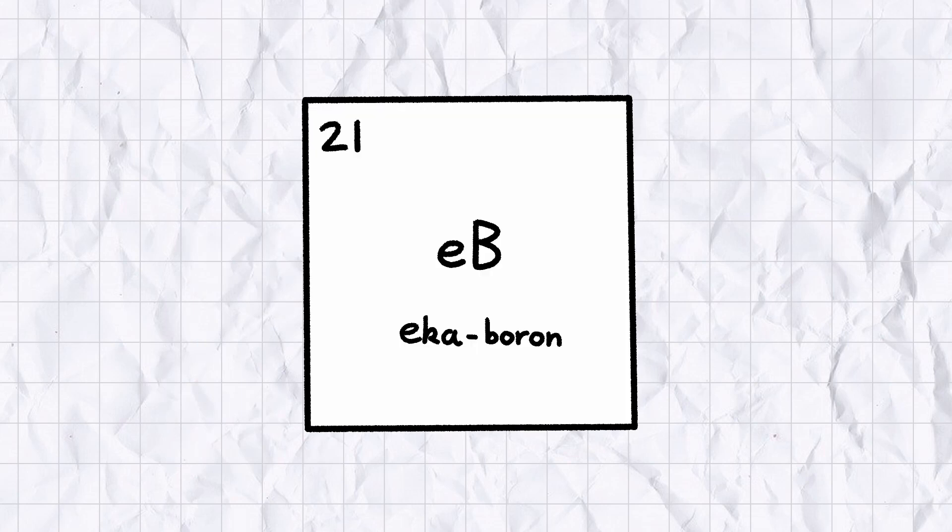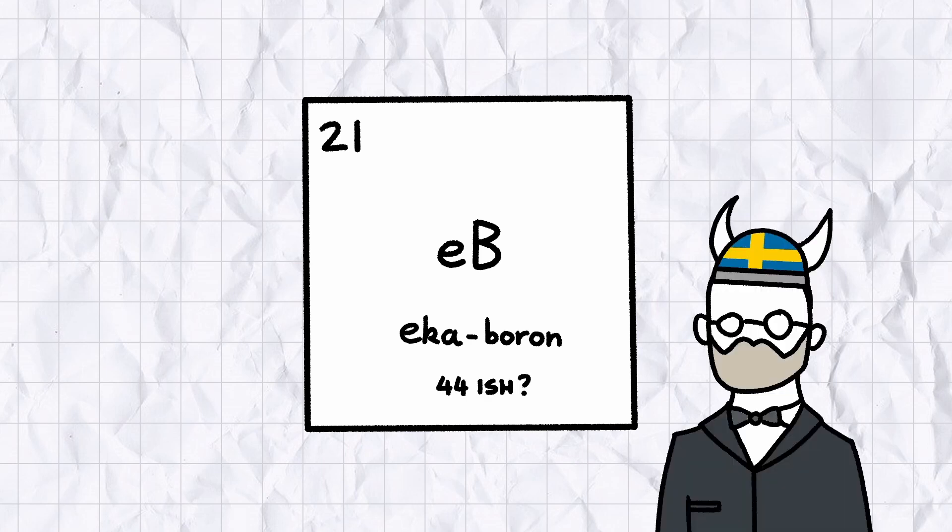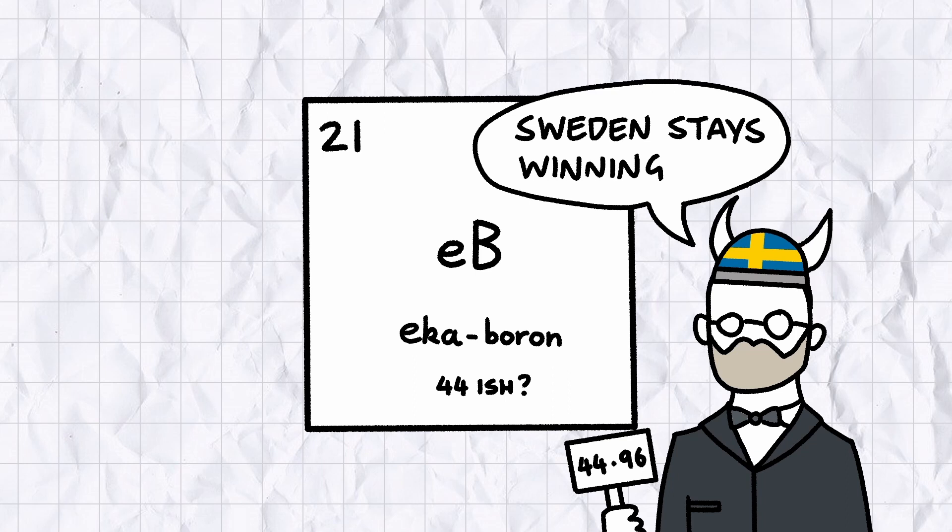One of these elements was the mysterious Echaboron, which Mendeleev predicted was a metal in between calcium and titanium with an atomic mass of 44. So when some Swedish randomo discovered a metallic element between calcium and titanium with an atomic mass within 2% of Mendeleev's prediction, you can imagine that it caused quite a stir.